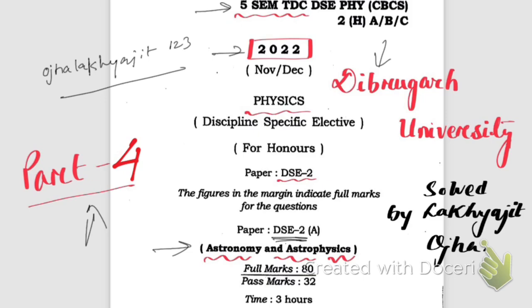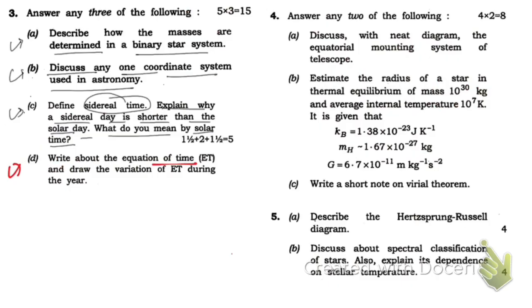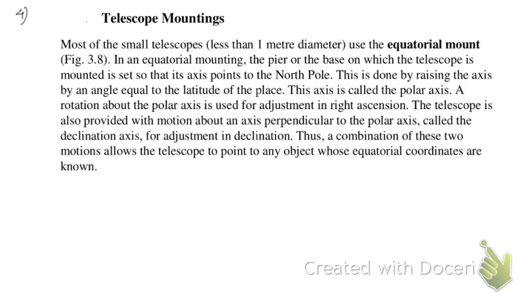Okay, so now let's start. We have already solved up to question number 3D. Now we're gonna start from question number 4A: 'Discuss with a neat diagram the equatorial mounting system of telescope.' I'm going to give you the answer directly without explaining it.